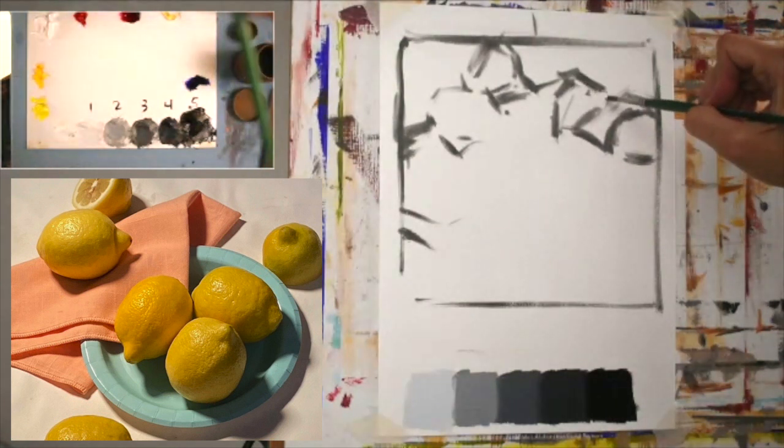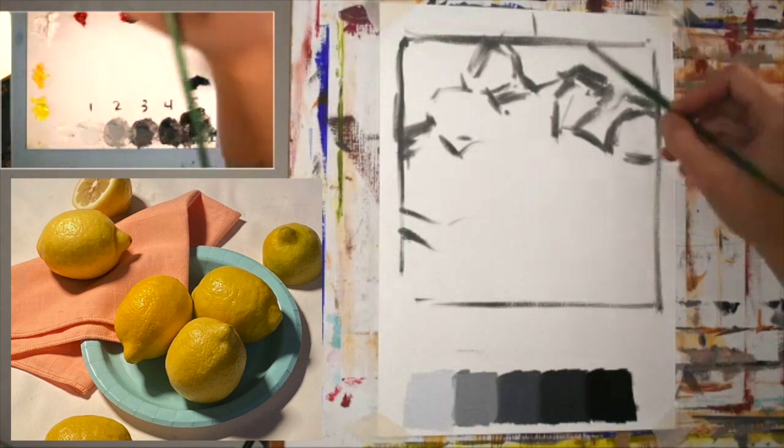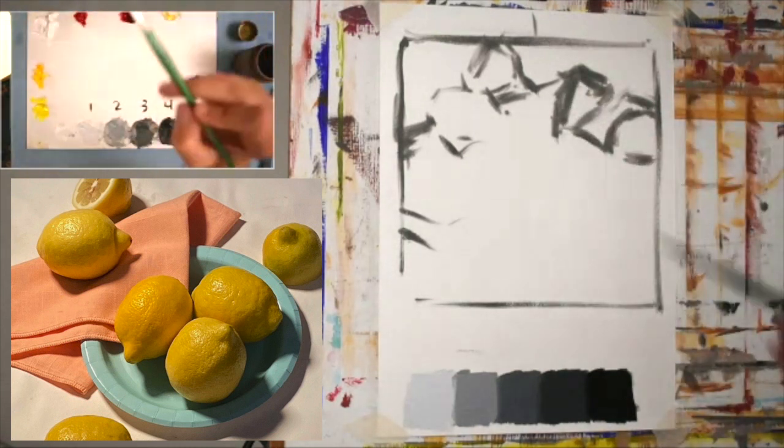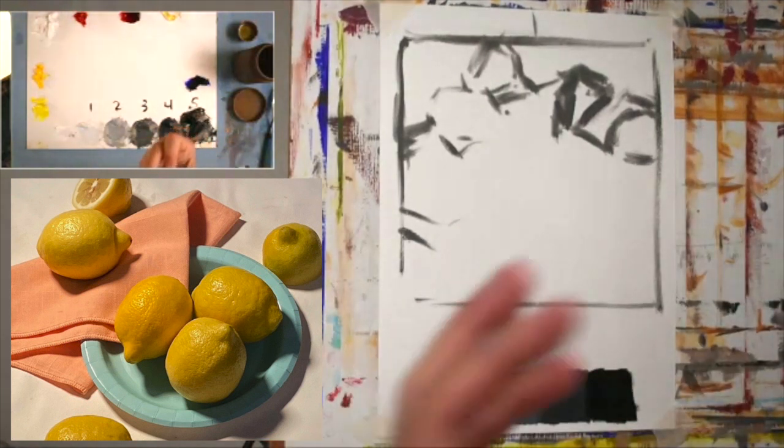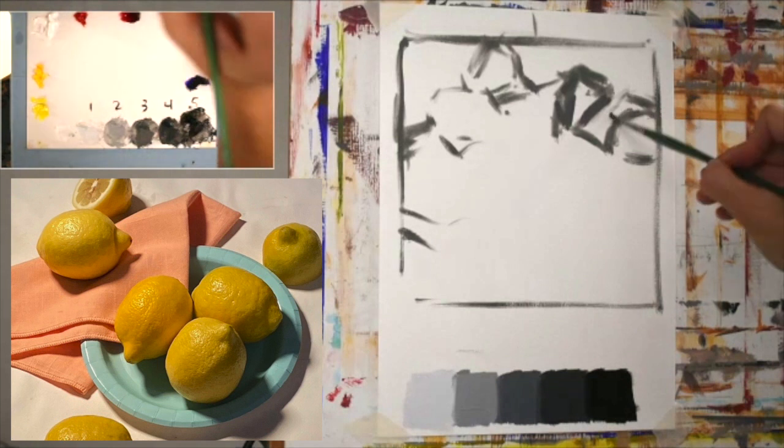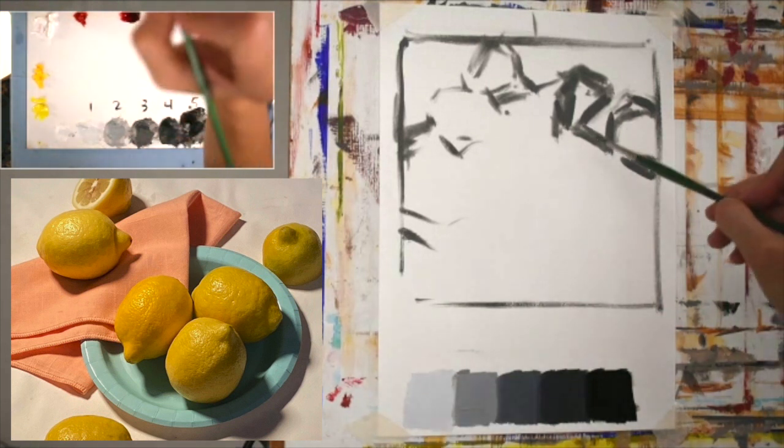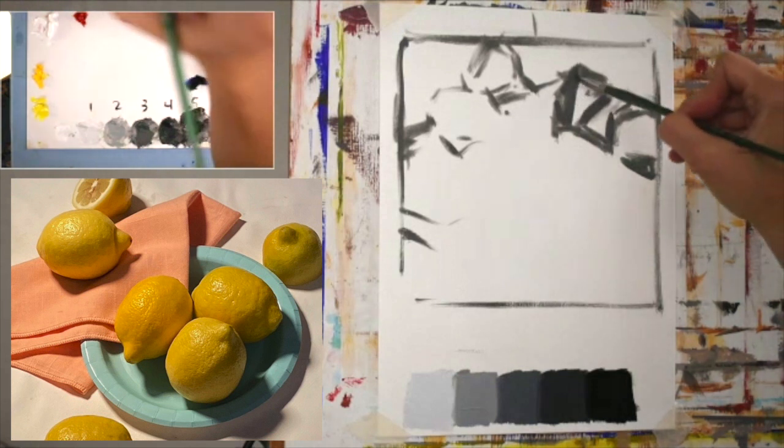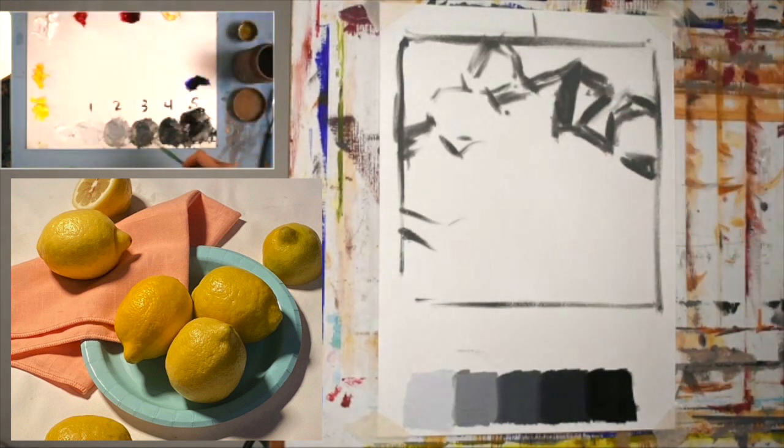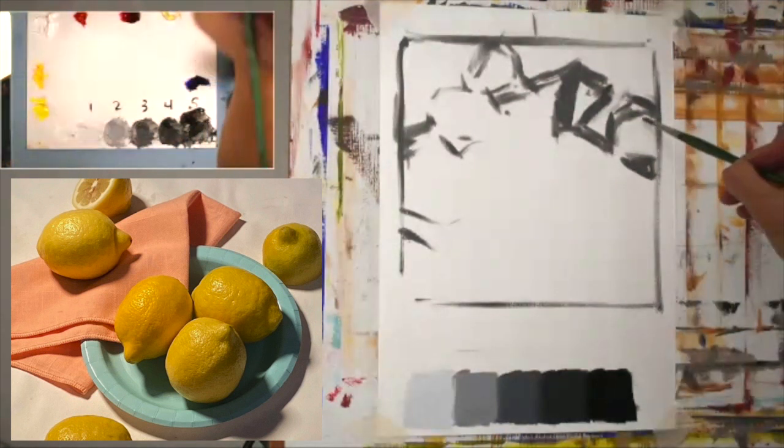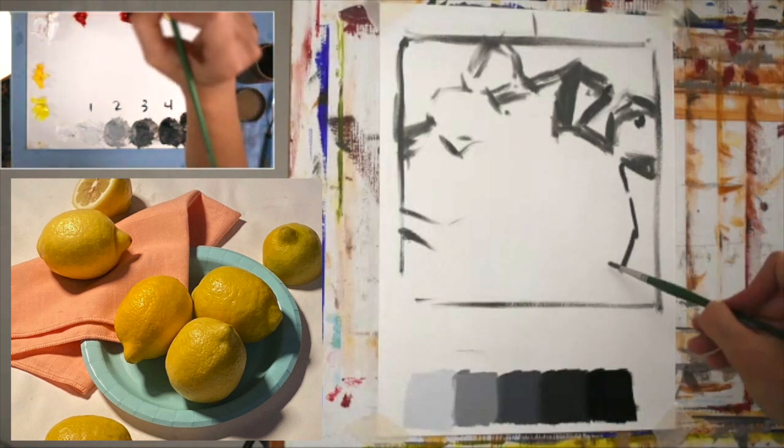Also to make some decisions about values, because here's the thing about composition: it's not really about where you put the lemon on the canvas. It's about the abstract painting, almost like a Rorschach test of the dark, medium, and light shapes that you're putting on that canvas. The point of a good composition is that it attracts the viewer's attention and then hangs on to it until they hopefully decide that they can't live without it.